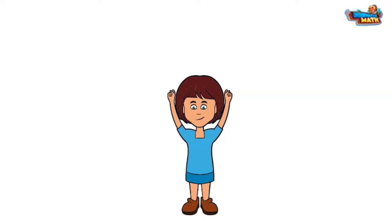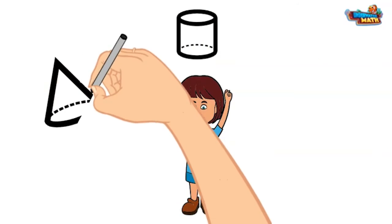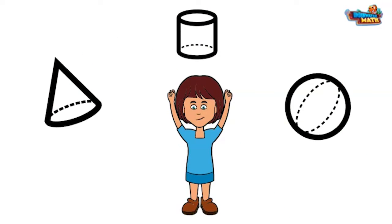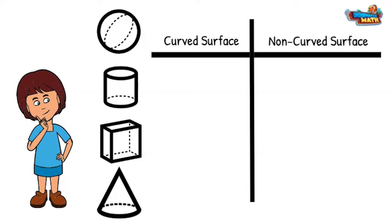Sometimes the surfaces of these three-dimensional shapes are curved. Here are some examples. Curved surfaces will roll easily. Let's sort the following shapes into curved and non-curved surfaces.